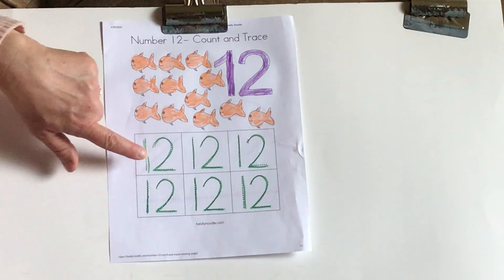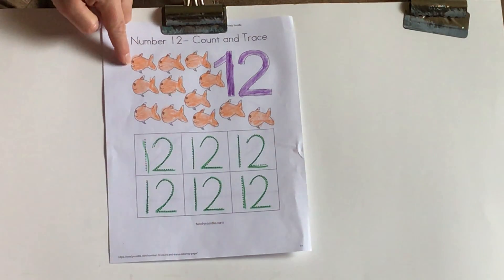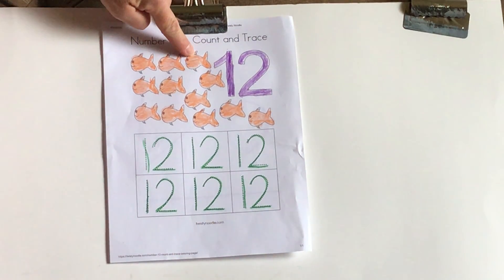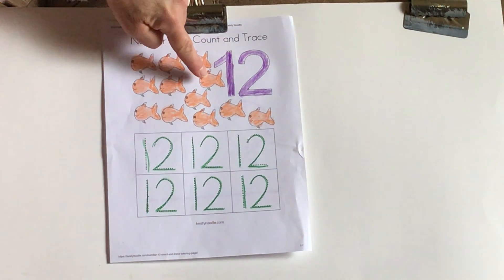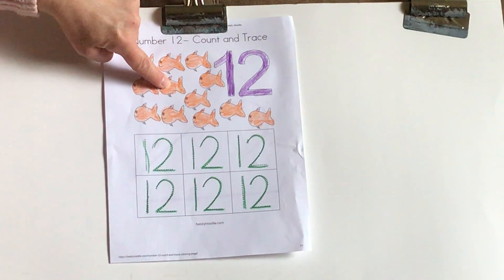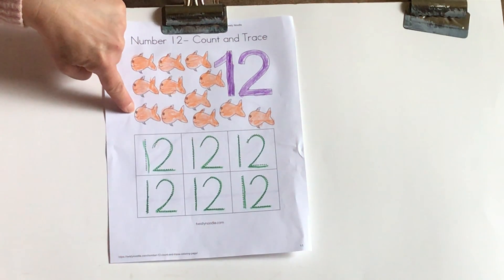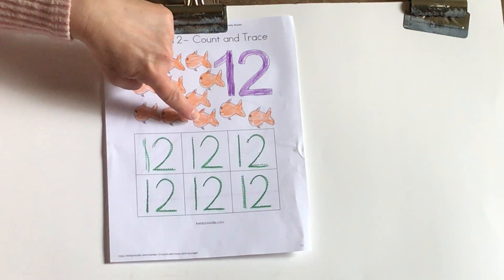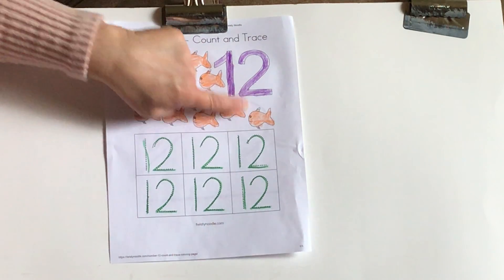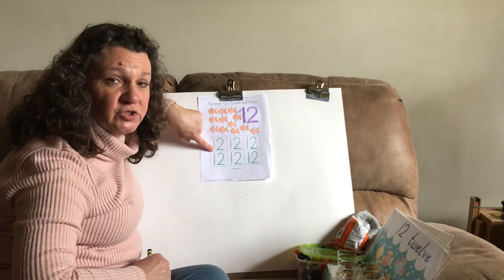So what number are we making? Number 12. We're going to count our fish one more time. Ready? 1, 2, 3, 4, 5, 6, 7, 8, 9, 10, 11, 12. So what number are we making? 12. Good job.